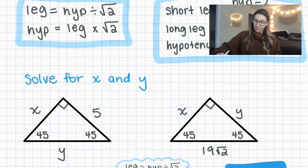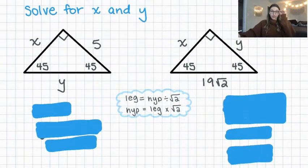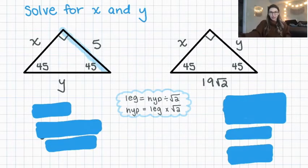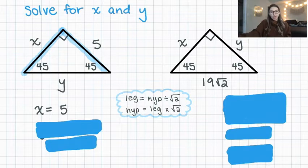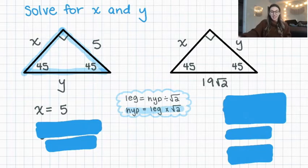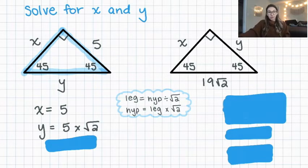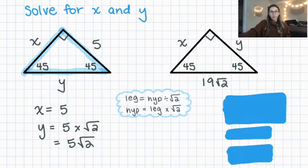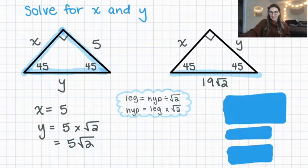Let's start with a 45-45-90 example. We're given that one leg is 5. The easiest place to start is finding the other leg, which is the same, so x equals 5. Then to find y — the hypotenuse — we remember that the hypotenuse equals the leg times the square root of two, so y equals 5 times the square root of two, written as 5√2.